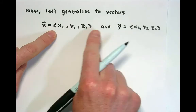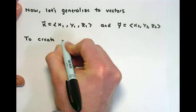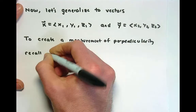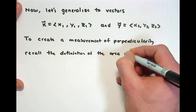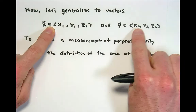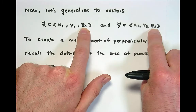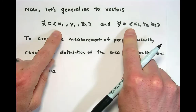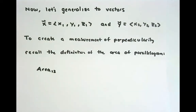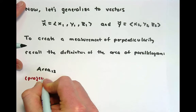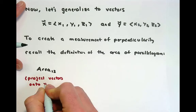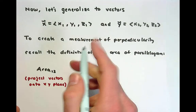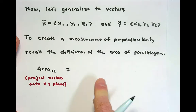We're going to want to find a measurement of perpendicularity. Recall the definition of the area of a parallelogram. Let's delete the third component and look at the area in the first two components — the area of the parallelogram formed by projecting these vectors onto the xy plane. The moment we project them onto the xy plane, we have a pure parallelogram in the exact form from our last video.